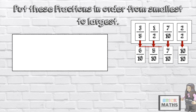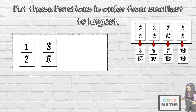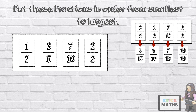Now that they all have the same denominator, we can put them in order by looking at their numerators. The smallest fraction is 5 tenths, which was 1 half. The next fraction is 6 tenths, which was 3 fifths. The fraction after that is 7 tenths. And finally, the largest fraction is 10 tenths, which was 2 halves — which is the same as 1 whole.